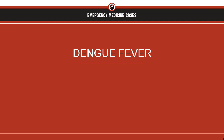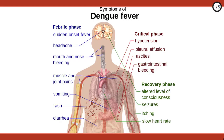Next up, dengue fever. Dengue is a viral hemorrhagic fever that's transmitted by mosquitoes. It carries a pretty high morbidity and mortality rate. There's a wide breadth of presentations with almost no pathognomonic signs, making this diagnosis really difficult.